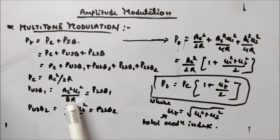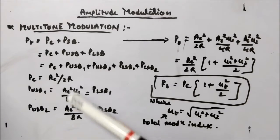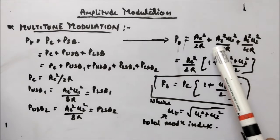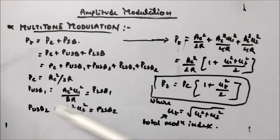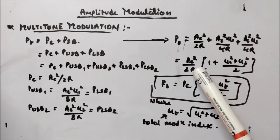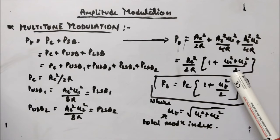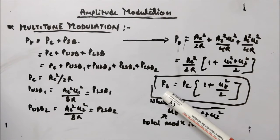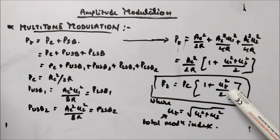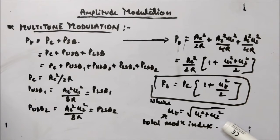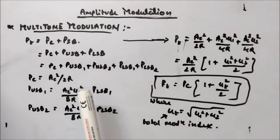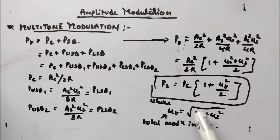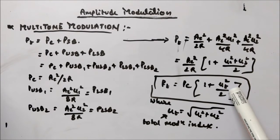Plugging these values in, you get AC²/2R + AC²·mu1²/4R + AC²·mu2²/4R. Taking AC²/2R as common gives PT = PC·(1 + (mu1² + mu2²)/2). Comparing with the standard formula PT = PC·(1 + muT²/2), the total modulation index muT equals √(mu1² + mu2²). So there is a change in the power of the multi-tone modulated signal because of the change in the effective modulation index — you now have √(mu1² + mu2²) instead of mu1 or mu2 alone.